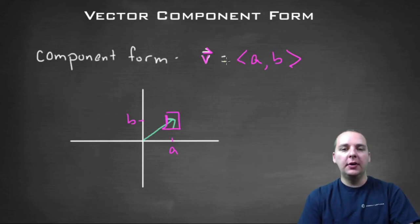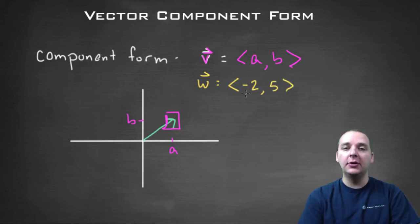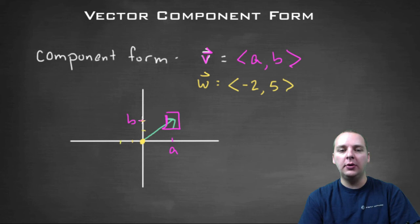So for example, if you had a vector w, that was the vector negative two comma five, then what we would do is, we would recognize that this is a vector starting at zero, zero, whose terminal point is negative two comma one, two, three, four, five. So it would start at the origin and end here. We would draw a line segment up to it. And so this is the vector w.